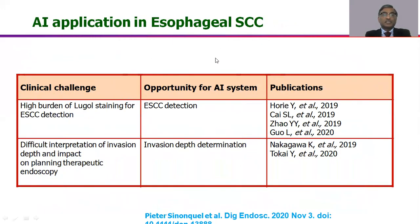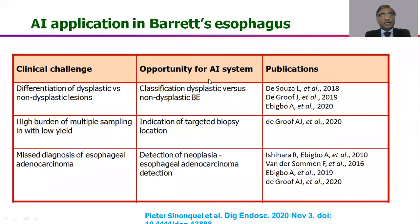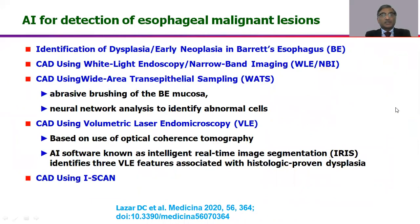Moving to the esophagus, there are many clinical challenges: Lugol's staining used for detection of squamous carcinoma, difficulty assessing depth of invasion when a lesion is seen, and in Barrett's esophagus and adenocarcinoma of the esophagus, difficulty mapping Barrett's, suspecting dysplasia, and suspecting malignancy. Many papers are addressing these aspects, and we will see examples of the systems available.